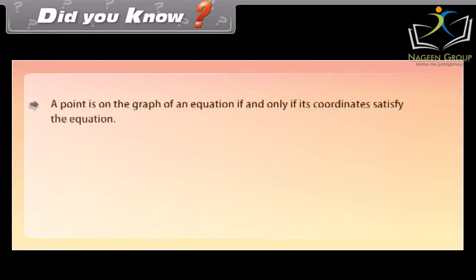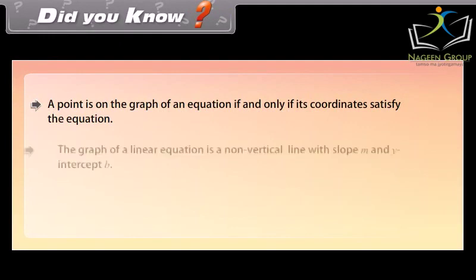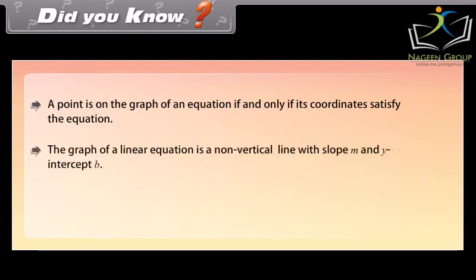Did you know? A point is on the graph of an equation if and only if its coordinates satisfy the equation. The graph of a linear equation is a non-vertical line with slope m and y-intercept b.